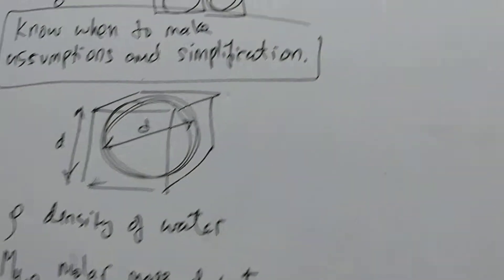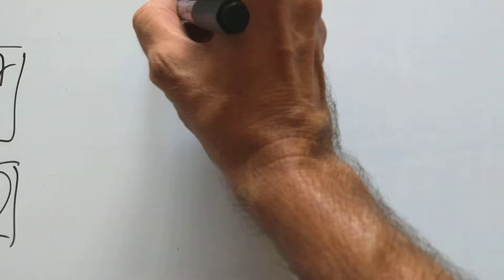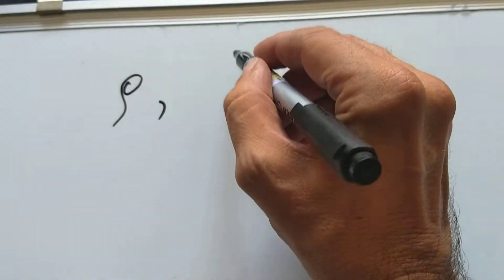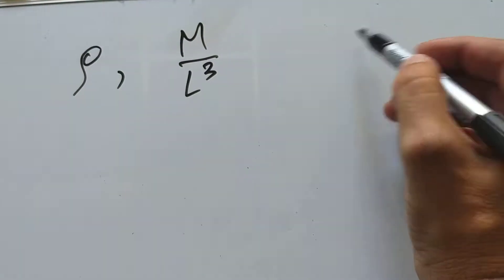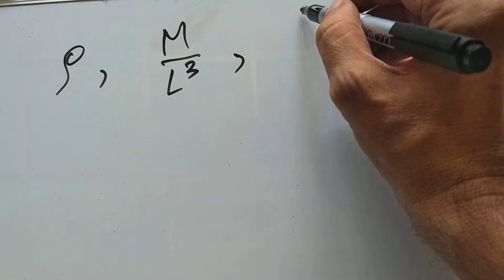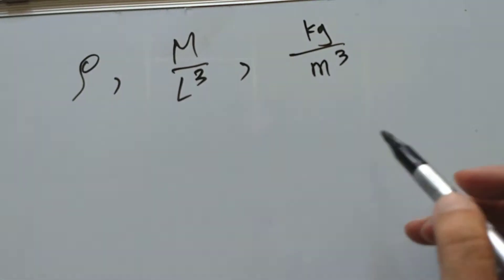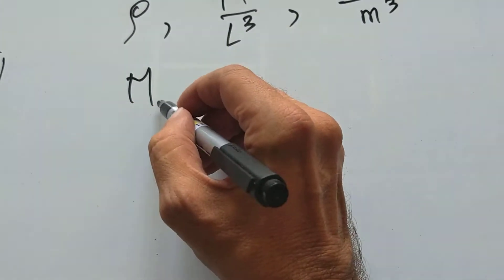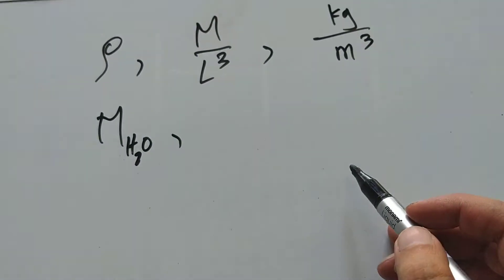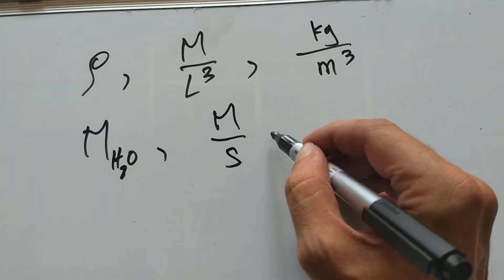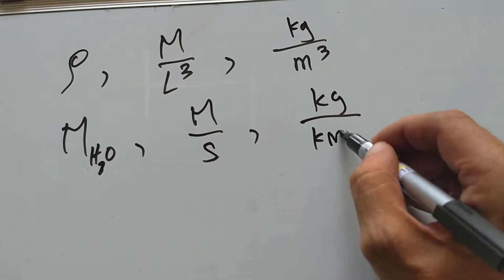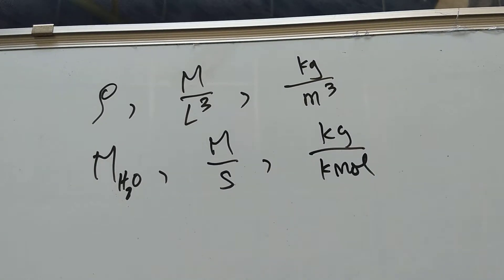Let us study now the dimensions and units of these things. Density has dimension mass over volume, that's mass over L cubed, length cubed. MKS units are kilograms per meter cubed. Molecular mass of H2O has dimensions mass over substance. That's kilograms per kilomole in MKS units.